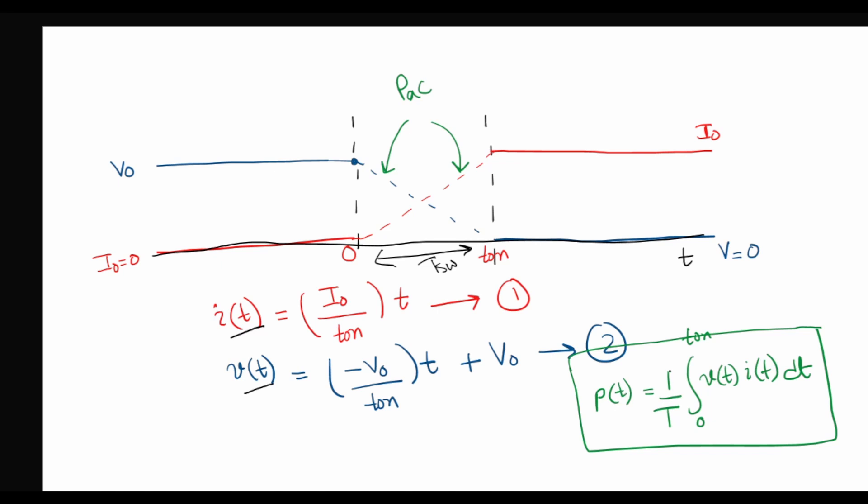P of t is equal to 1 over T, where T is the complete period, integral 0 to T on, which is the switching period, V of t times I of t. So in today's lecture we will be computing this expression in order to see what the AC power loss comes out to be.